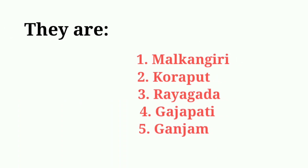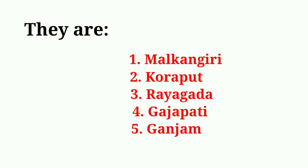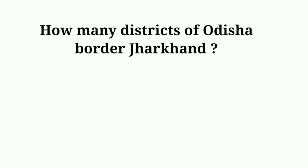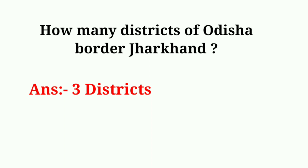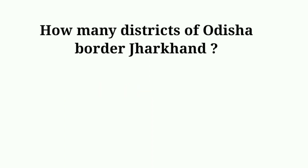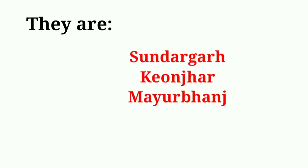The five districts of Odisha bordering Andhra Pradesh are: Malkangiri, Koraput, Rayagada, Gajapati and Ganjam. How many districts of Odisha border Jharkhand? Answer: 3 districts. They are Sundargarh, Keonjhar, and Mayurbhanj.